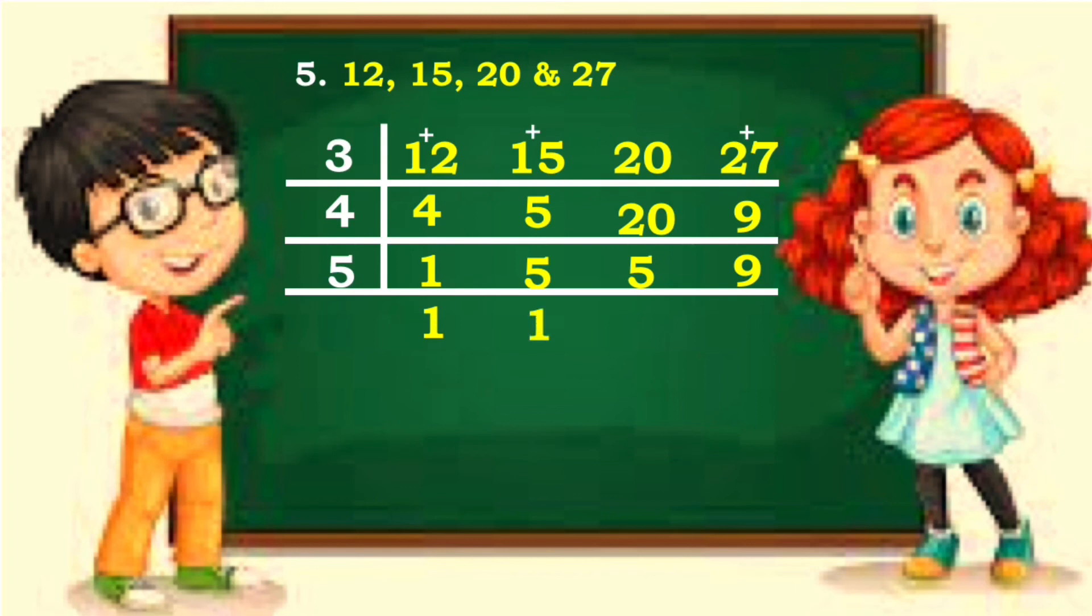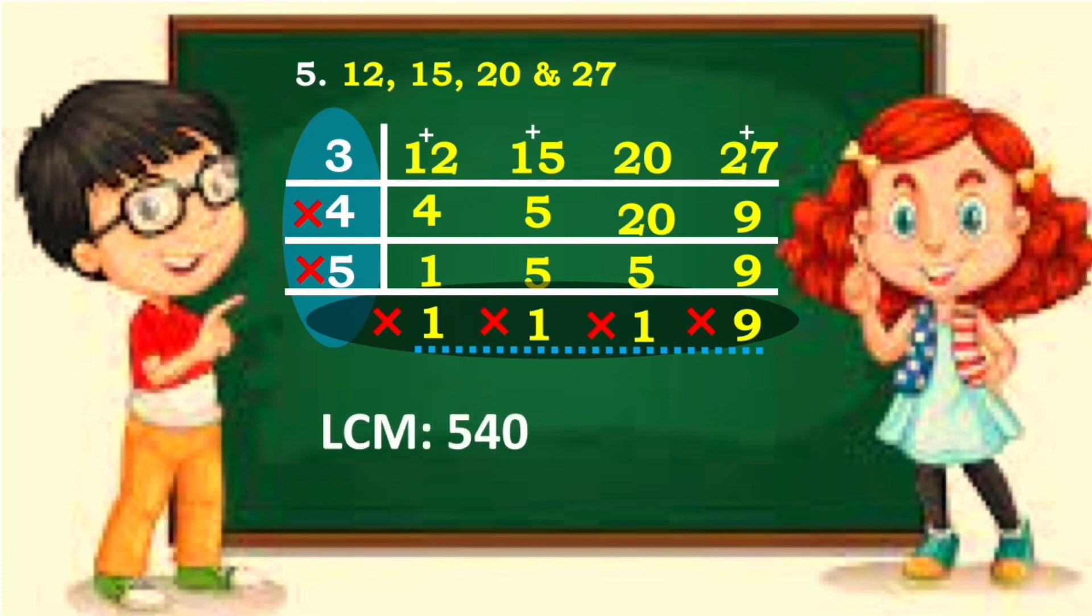Again, 5 divided by 5 is 1. Then rewrite 9. The last quotients have no common factor already. Multiply all the divisors and the last quotients. Therefore, the LCM is 540.